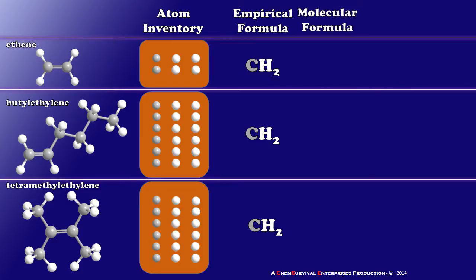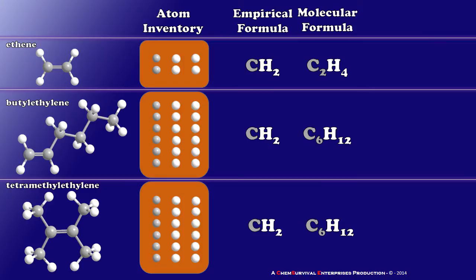Let's go one level up and look at the molecular formula instead. The molecular formula gives us the total number of each atom rather than just the ratio. So ethene is C2H4, while butylethylene is C6H12. The molecular formula has allowed us to distinguish those two compounds. But knowing the number of atoms isn't enough, because tetramethylethylene will have the exact same molecular formula as butylethylene. So we have to go one step further.